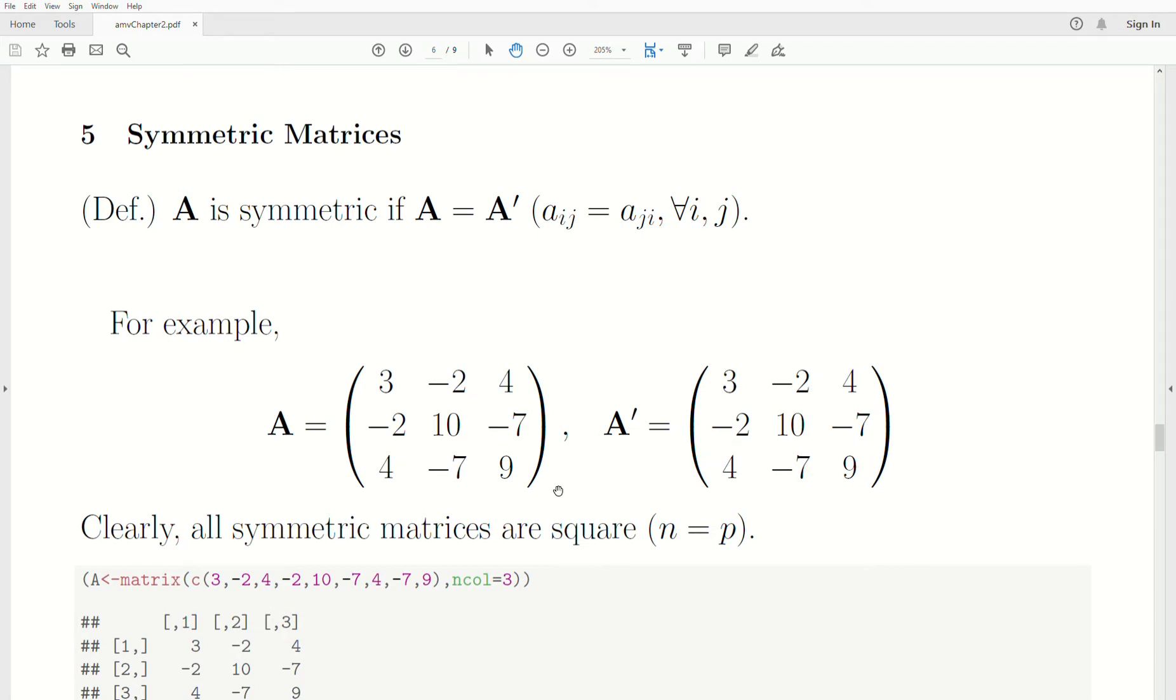Another way to think about symmetric is that elements in the off diagonals are equal. And that's kind of a vague way to say it. But this is equal, the corresponding element on the other side of the diagonal are equal. Four and four, minus seven, minus seven.